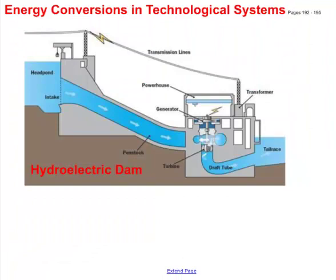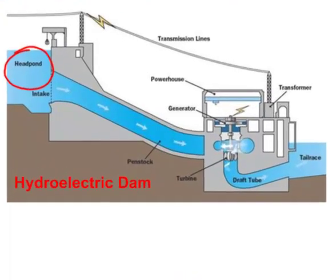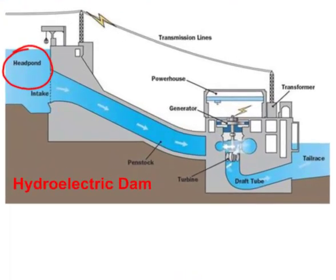Let's have a look at a hydroelectric dam and how it performs energy conversions. We begin with the water at the very top of the dam. Because this water is up high, it has a lot of potential energy — or gravitational potential energy.